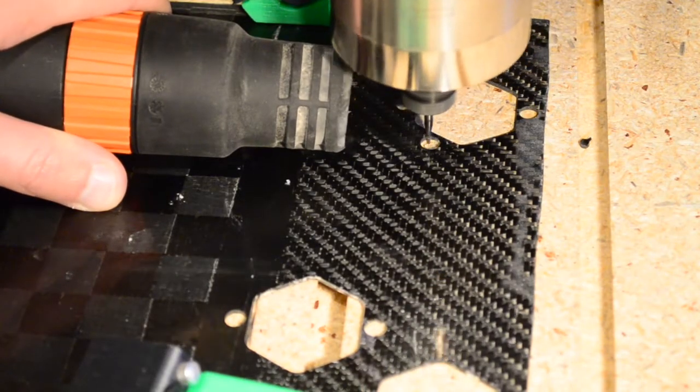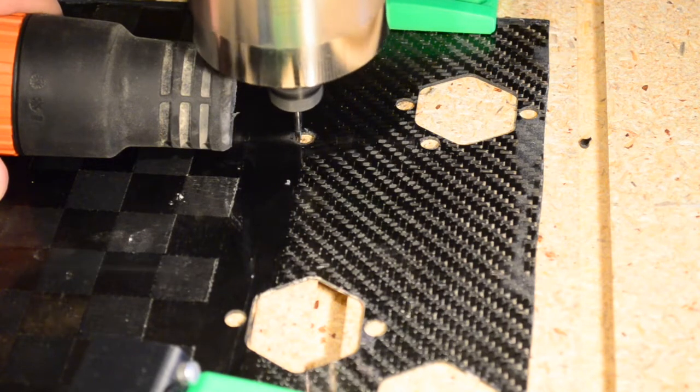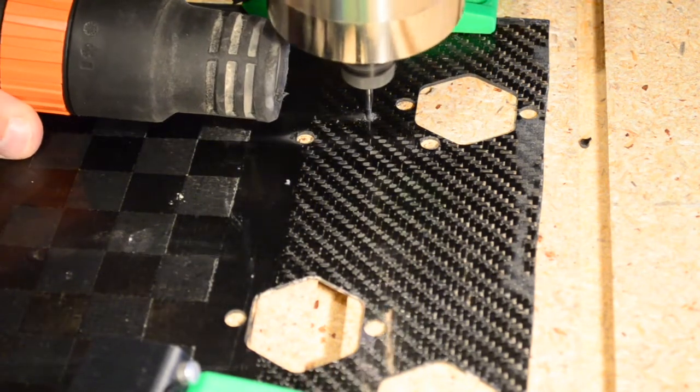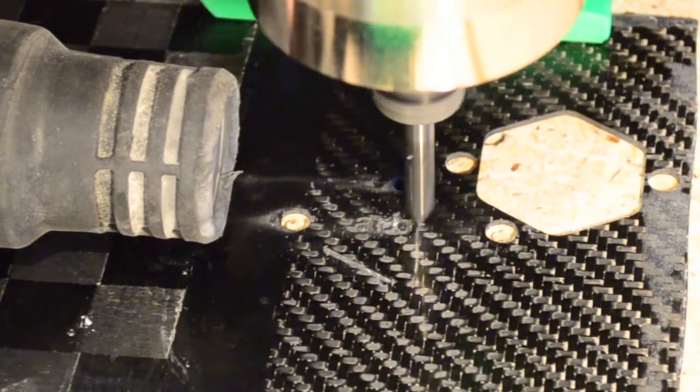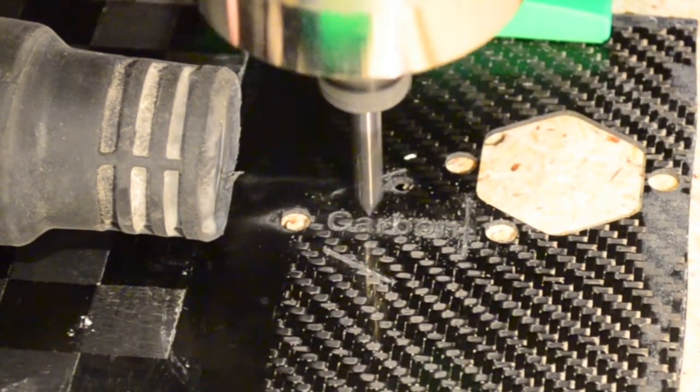The first operation is cutting the pin holes. Remember that this cuts down into the spoil board. Next, I cut the hole for the tag. Then, after a tool change, I use the 60 degree bit to cut the front side lettering.